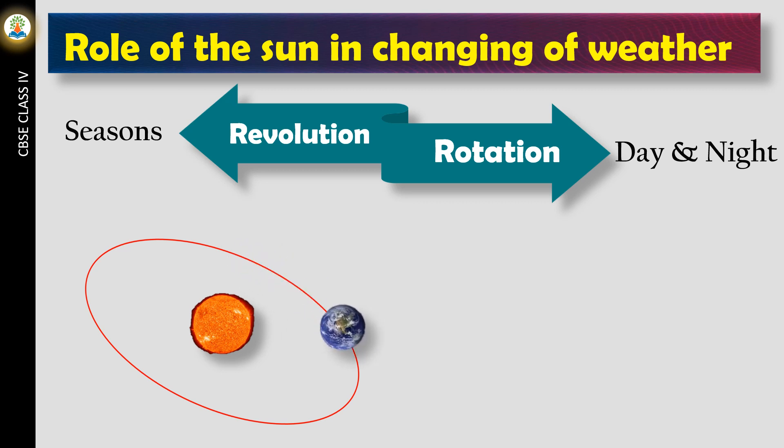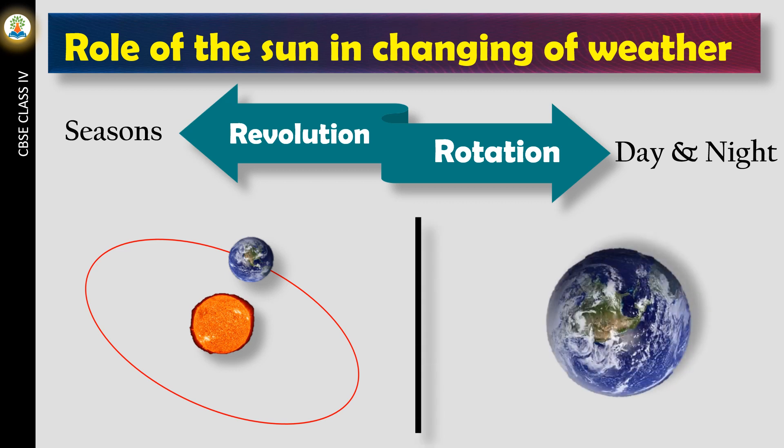The movement of the earth around the sun in its orbit is called revolution. The revolution of the earth causes change in seasons. The earth also rotates on its axis while revolving around the sun, called rotation. Rotation causes day and night.